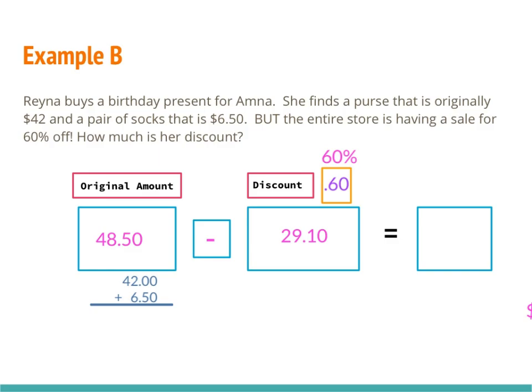The problem asked how much is her discount — so I don't need to go any further. My answer is $29.10. It's very important to read the problem carefully and figure out what it's asking. If it asks for just the discount, don't do extra work. If it asks for the total cost, then you do the extra step. Make sure you're answering exactly what the problem asks.